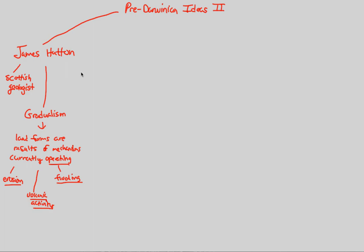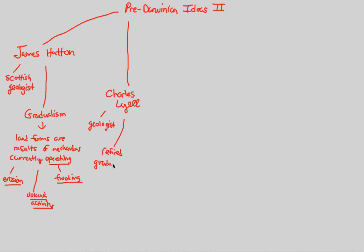Continuing after James Hutton, we have a very important man: Charles Lyell. He was very influential to Darwin himself. Charles Lyell was a geologist who looked at a refined version of gradualism. He looked at Hutton's work and refined it. In his refined version, he developed something known as the Doctrine of Uniformitarianism.